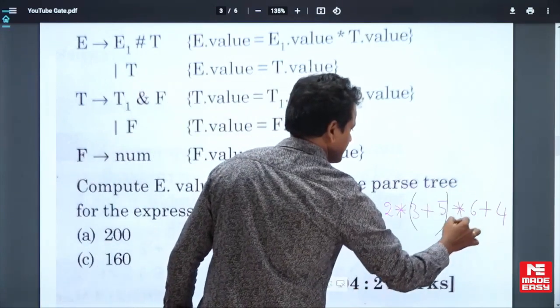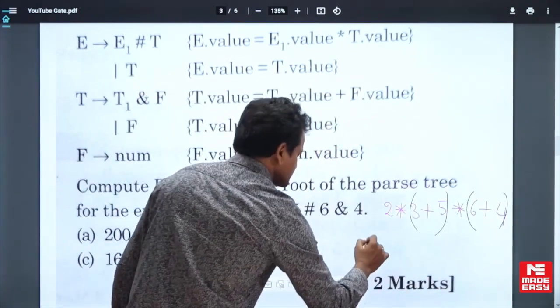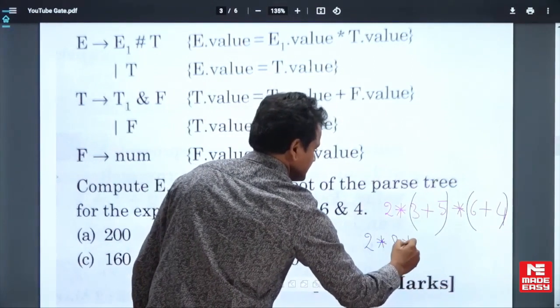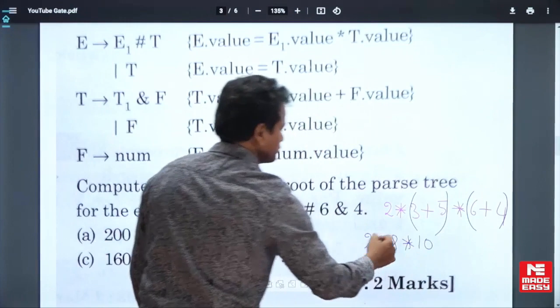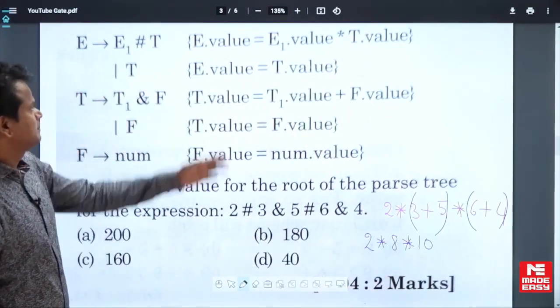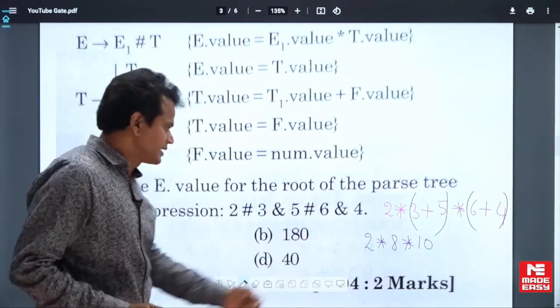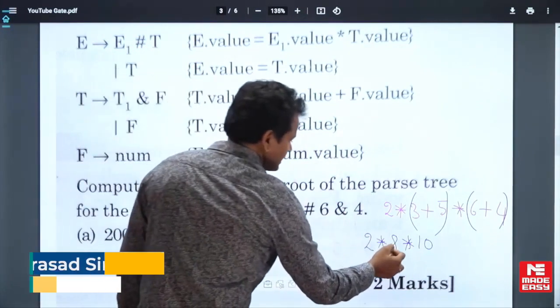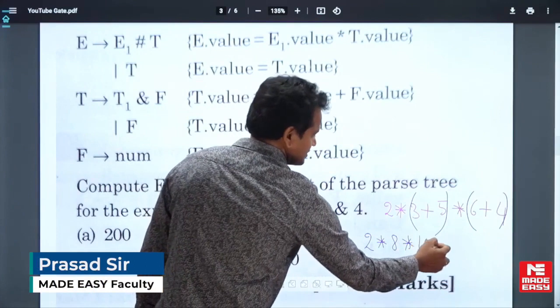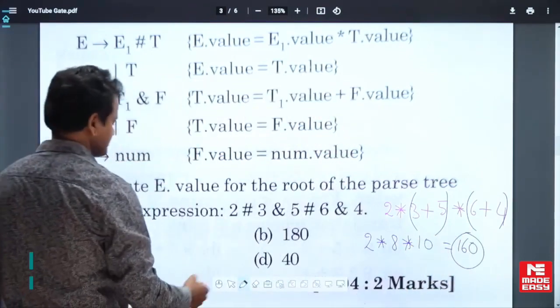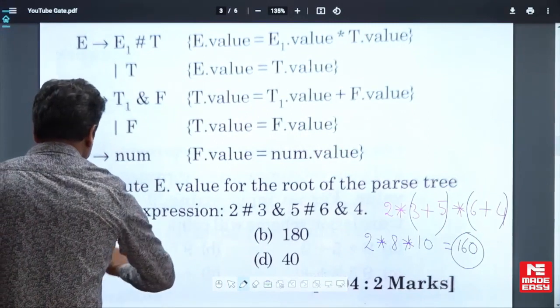What is 2 into 3 plus 5? 8. 6 plus 4? 10. So, 2 into 8 into 10. Multiplication is left associative, even though if we do it right we do not get any problem. Here it is left associative: 2 into 8 is 16, 16 into 10 is 160. So 160 is the answer. You can answer this question within less time. 2 marks.